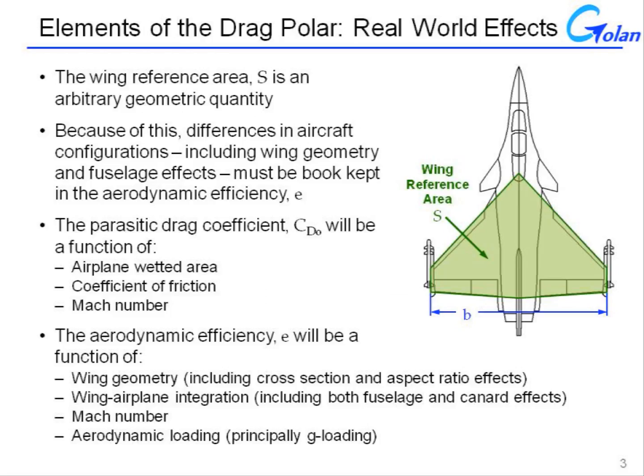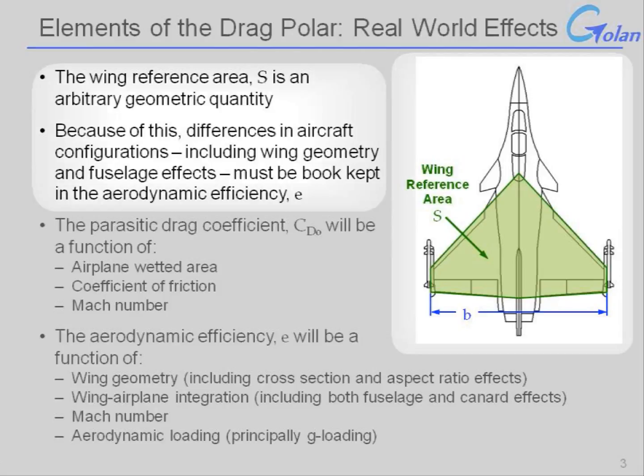In order to be effective, the drag polar has to account for a number of real-world effects. The first is that the wing reference area is fundamentally a somewhat arbitrary geometric quantity. It's what you would get if you were to extend the leading edge and the trailing edge of the wing all the way to the aircraft's centerline. This means, in practice, that things like the wing cross-section, as well as the integration of the fuselage to the wing, and whether you have a canard configuration versus a conventional tail configuration, all have to be book-kept into the aerodynamic efficiency.